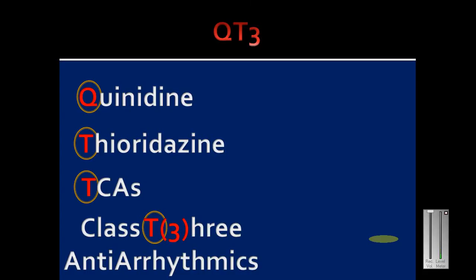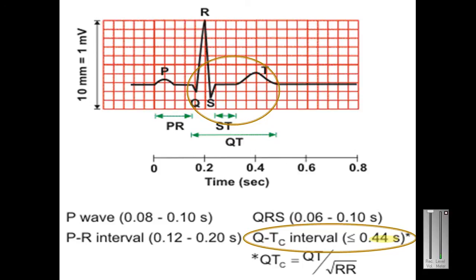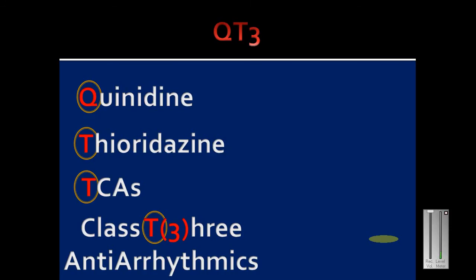Let's begin with the mnemonic. The drugs that increase QT interval are QT3. Q refers to quinidine, T for thioridazine which is an antipsychotic, and then TCAs are tricyclic antidepressants, and class three antiarrhythmics which include amiodarone and sotalol.